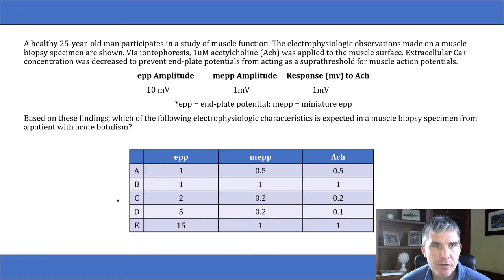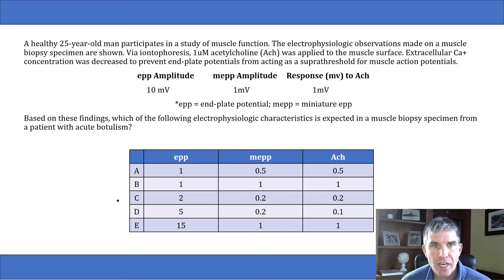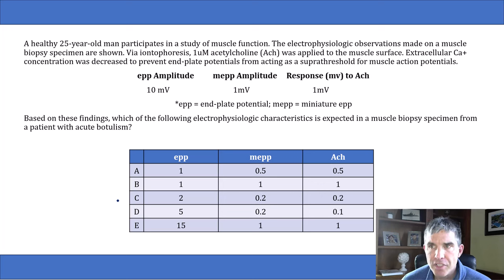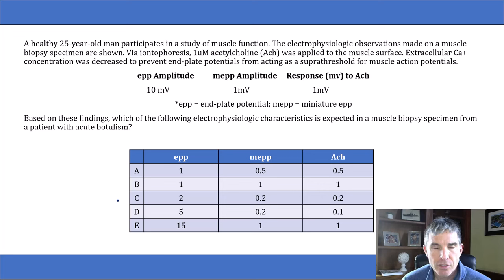The question says: a healthy 25-year-old man participates in a study of muscle function. The electrophysiologic observations made on a muscle biopsy specimen are shown via iontophoresis. One micromolar of acetylcholine was applied to the muscle surface. The extracellular calcium concentration was decreased to prevent end plate potentials from acting as a super threshold for muscle action potentials. They show us some data. The EPP amplitude is 10.